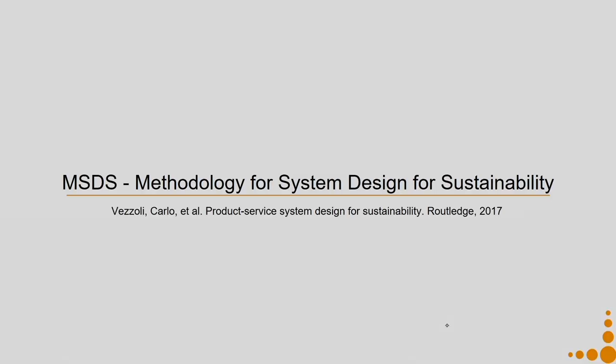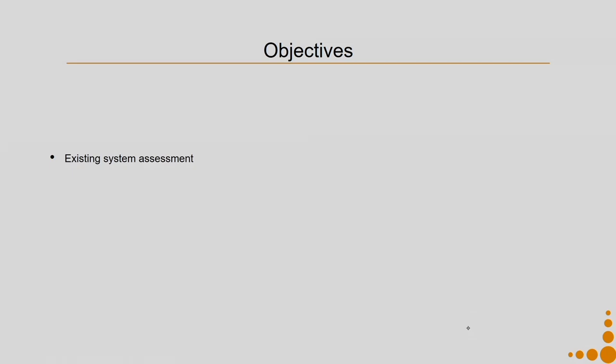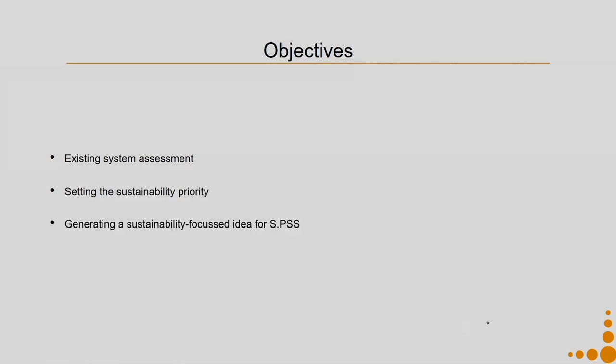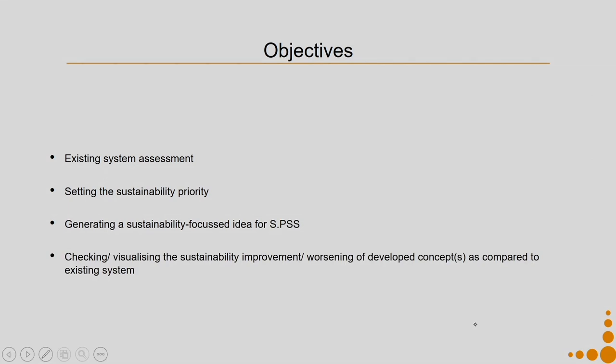Let us start with our methodology — the MSDS methodology — on which we spent a considerable amount of time. The objectives of this methodology are to analyze the existing system and do an assessment, then set the sustainability priority in the context of the above analysis, then generate a sustainability-focused idea for SPSS and check or visualize the sustainability improvement or worsening of the developed concept as compared to the existing system. This methodology helps us to design sustainable product service systems and is a modular way of designing for system design for sustainability.